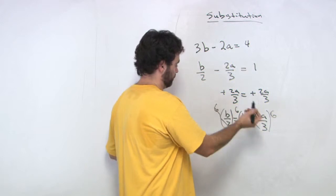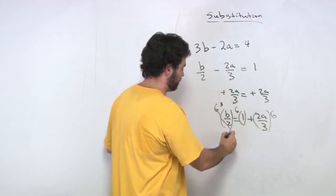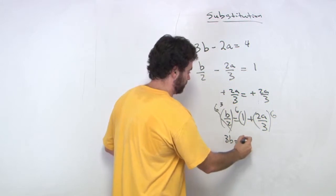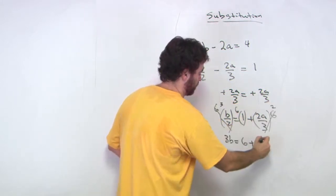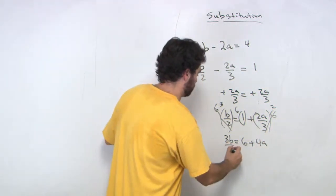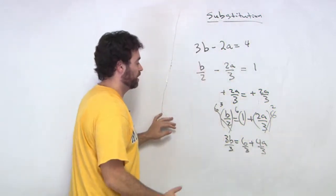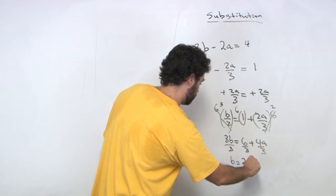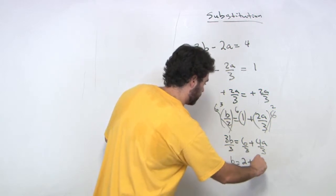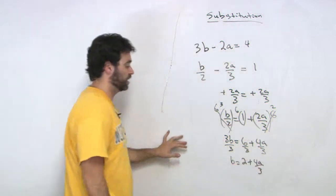This becomes 3b, 3b equals 6 plus 4a. Divide out the 3, and what do we get? We get b equal to 2 plus 4a over 3. Okay?